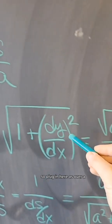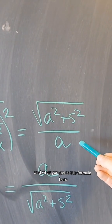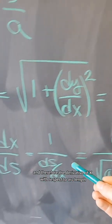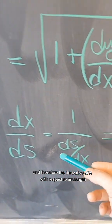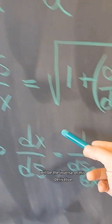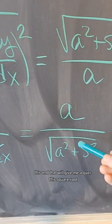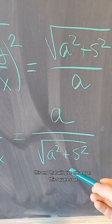So plug in here S over A and what you get is this formula here. Therefore the derivative of X with respect to arc length will be the inverse of this derivative, and that will give me A over this square root.